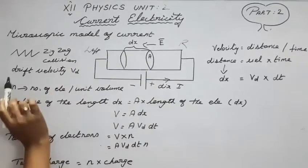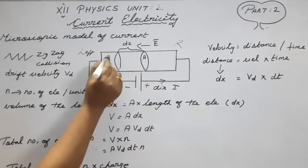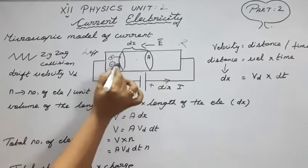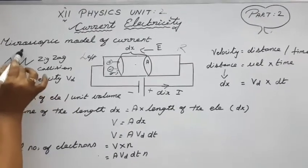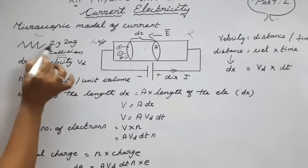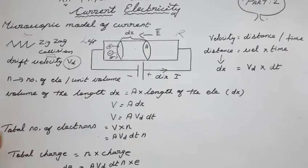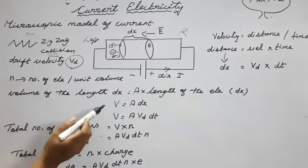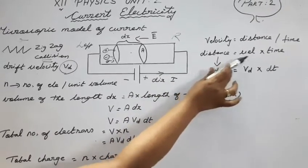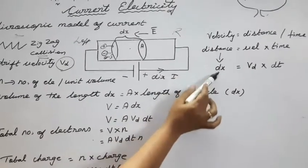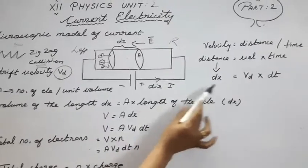As usual, we know that there are positive and negative ions in the conductor. When an electric field is applied, the negatively charged ions move towards the positive side. As they move, collisions occur, creating a zigzag motion — due to this, the drift velocity is created. The velocity formula is distance by time, so distance equals velocity into time.